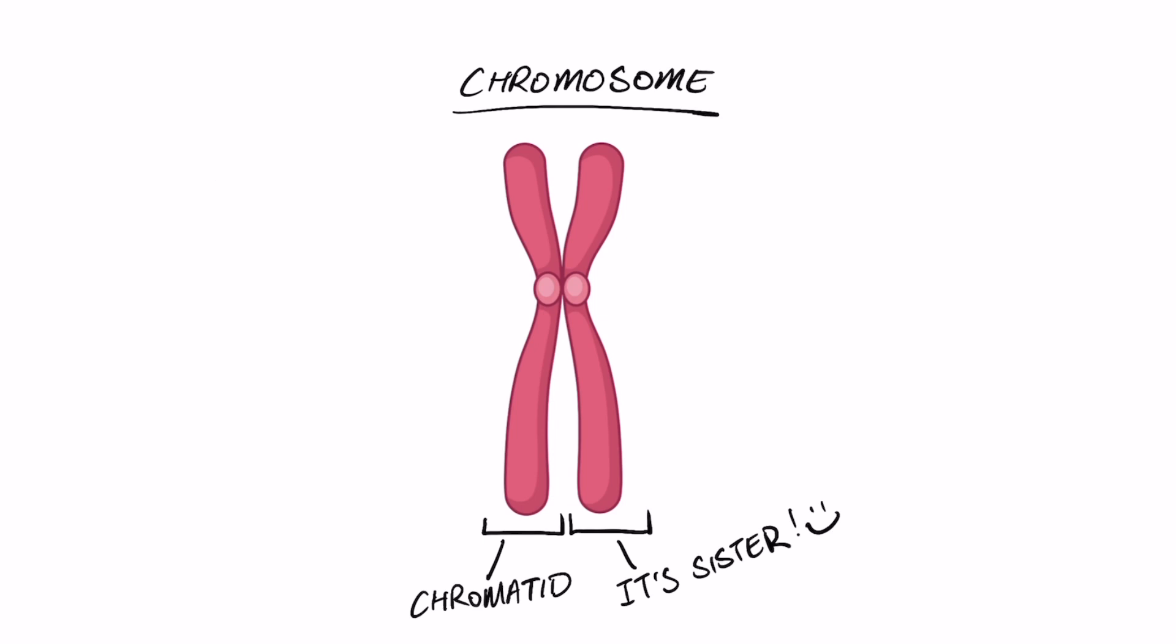Anyway, so we've got two sister chromatids. Each sister chromatid will have a short and a long arm. The short arm is denoted by the letter P in lowercase, and the long arm denoted by the letter Q also in lowercase. This helps us more specifically identify regions on a chromosome.